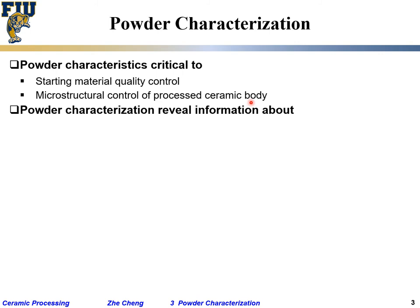Powder characterization provides information about several aspects. One is chemical composition: what are the phases, what are the impurity elements or impurity phases — for example, whether it's aluminum oxide or silicon dioxide, or whether it's graphite versus diamond. This covers major phases as well as impurity elements and their contents.